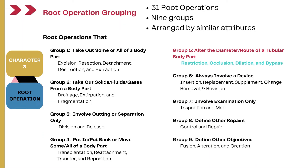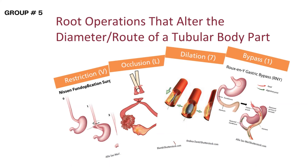There are a total of 31 root operations in the medical and surgical section, and these root operations are divided into nine groups based on similar attributes of surgical procedures. Today we are looking at the fifth group, which talks about root operations that alter the diameter or route of a tubular body part. There are four root operations in this fifth group: restriction, occlusion, dilation, and bypass — all four are among the most important root operations in ICD-10 PCS.